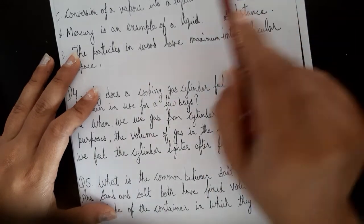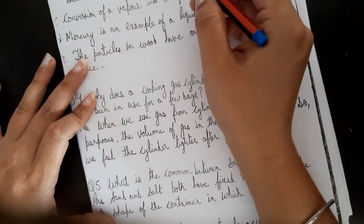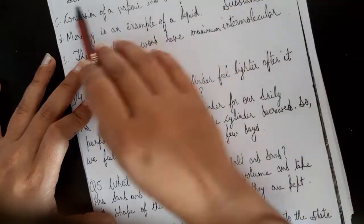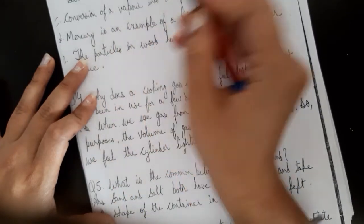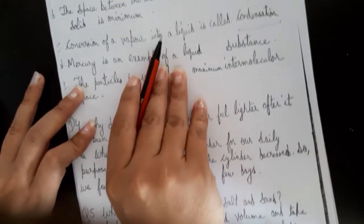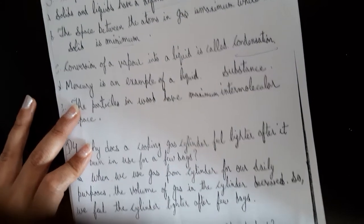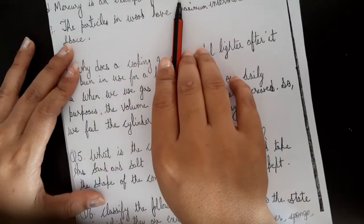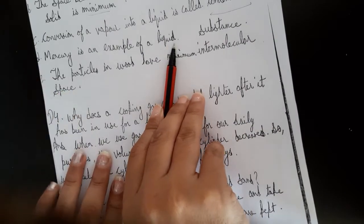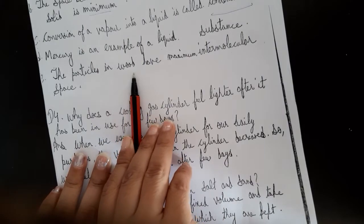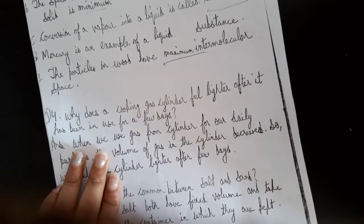Complete the following fill-up: Solid and liquids have a definite shape, but gases do not. The space between atoms or molecules is maximum in gas, while in solid it is minimum. Mercury is an example of a liquid substance. The particles in gas have maximum intermolecular space.